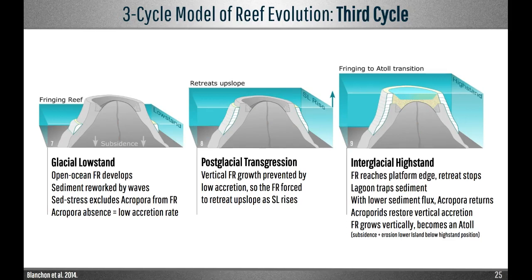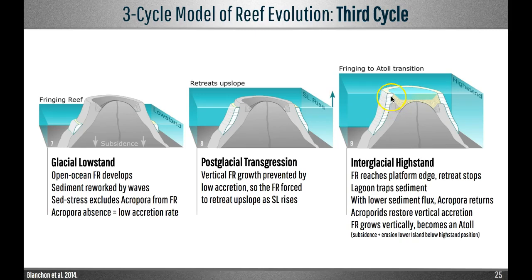Finally, the third cycle. It starts again after sea level falls to the glacial low stand, and an open ocean fringing reef develops. Waves suspend sediment, excluding acroporids and suppressing accretion. Post-glacial sea level rises and the fringing reef is forced to retreat upslope. When it intersects the edge of the subsiding barrier reef flat from the previous cycle, sediment is trapped once again and acroporids return. Only then can the fringing reef grow vertically, keeping pace with the remaining sea level rise — but this time it transforms into an atoll, because together subsidence and erosion have lowered the volcanic island below the interglacial high stand level.